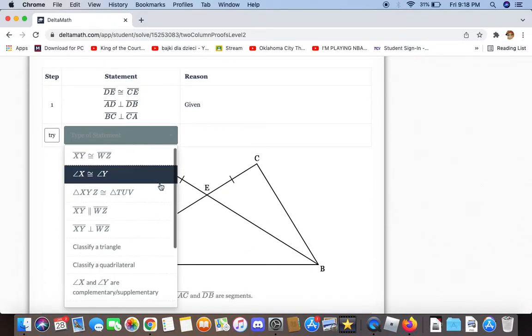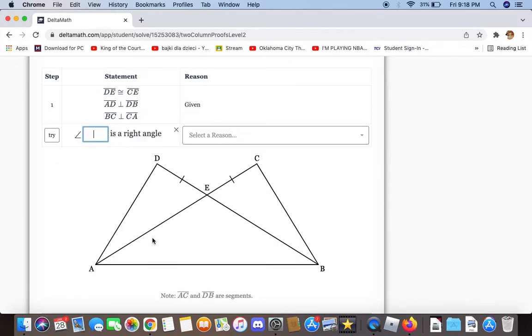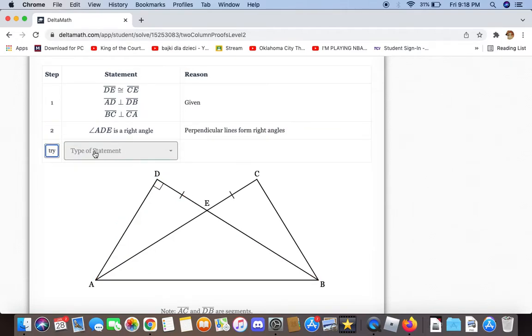The first thing we can say is angle ADE is a right angle, and the reason is perpendicular lines form right angles. We can say the same thing about angle BCE.